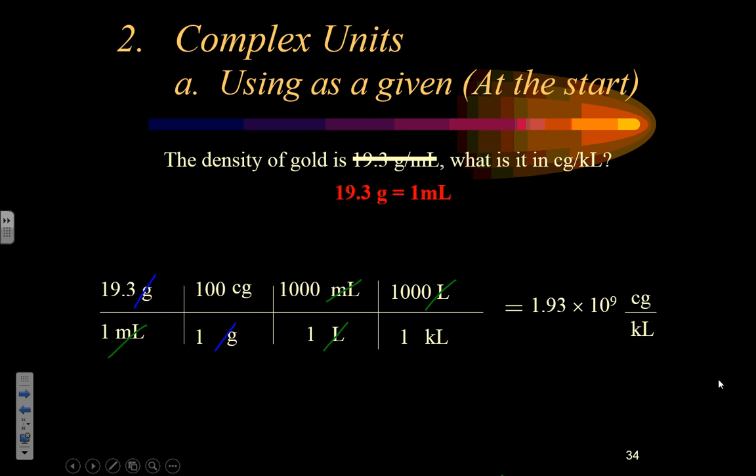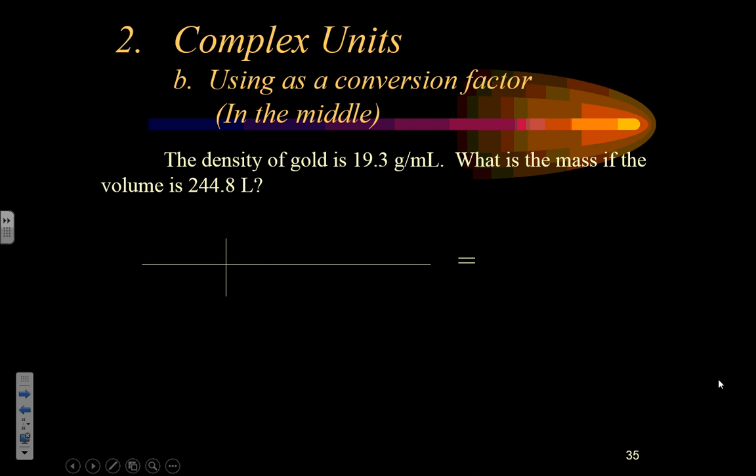That's how you handle a complex unit when it's your starting point. Remember, as a complex unit, it's easier to see how we're going to use it if we write it as an equality — and it puts that 1 in there, reminding us that as an equality we're going to write it as a ratio.